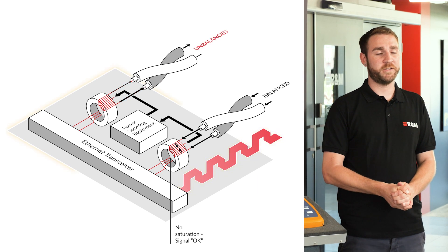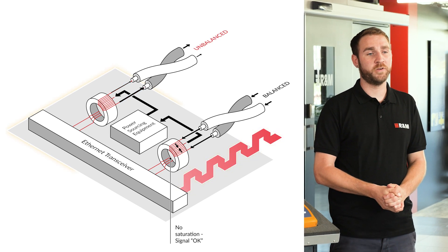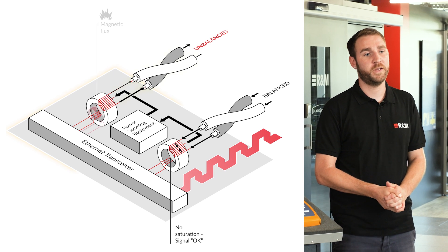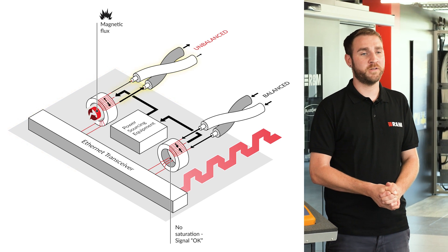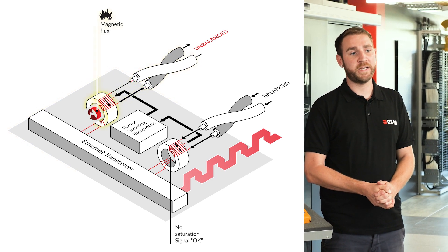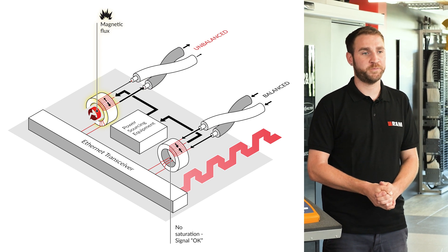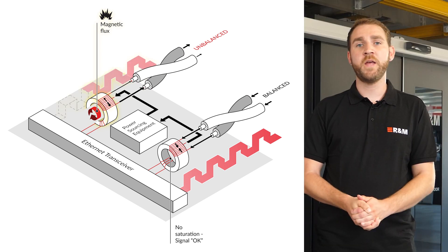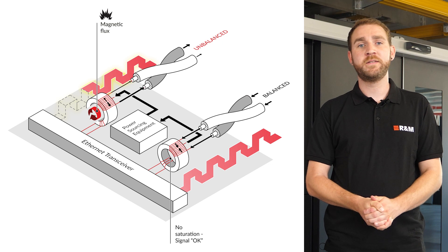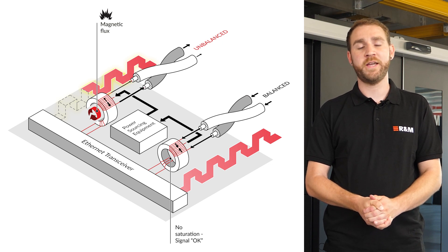In an unsymmetrical system, the currents on both conductors of a pair are not equal. They do not cancel each other out in the transformer and magnetic flux is created. If the ferrite core is saturated, data transmission is not guaranteed.